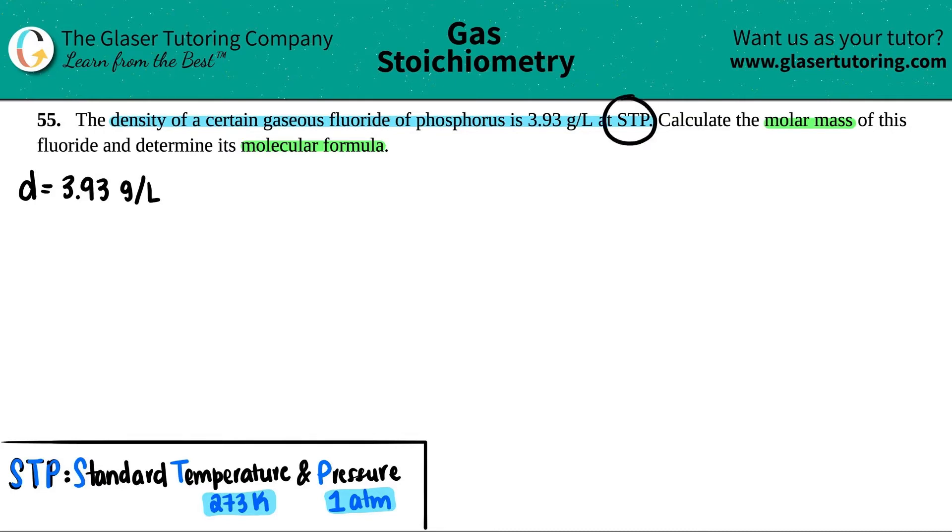And now they're saying that this is STP. Remember, whenever they give you STP, they're secretly giving you other values. STP means standard temperature and pressure. When you're at STP, you have a temperature of 273 Kelvin and you have a pressure of 1 atm.